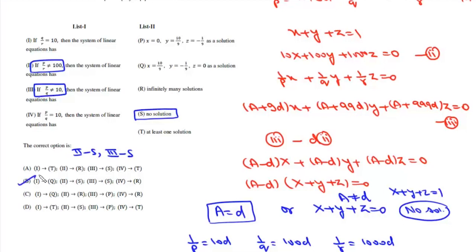This means the correct option is option B. When A = d, we have two equations: X + Y + Z = 1 and 10X + 100Y + 1000Z = 0.